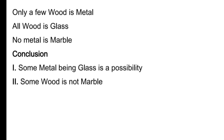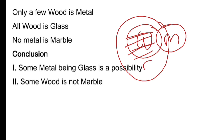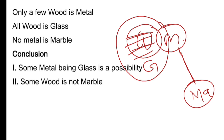Ab start karte hain question solve karna. 'Only a few wood is metal' diya hua hai — pehle diagram banaate hain. Yeh hota hai 'only a few' ka diagram — idhar wala part nahi ho sakta, isliye hum aise karte hain. 'All wood is glass' — wood ke poore bahar glass banate hain. 'No metal is marble' — metal bilkul bhi marble se related nahi hai, isliye isko alag banayenge. Ab hum dekhte hain conclusion — kaun sa sahi hai, kaun sa galat.